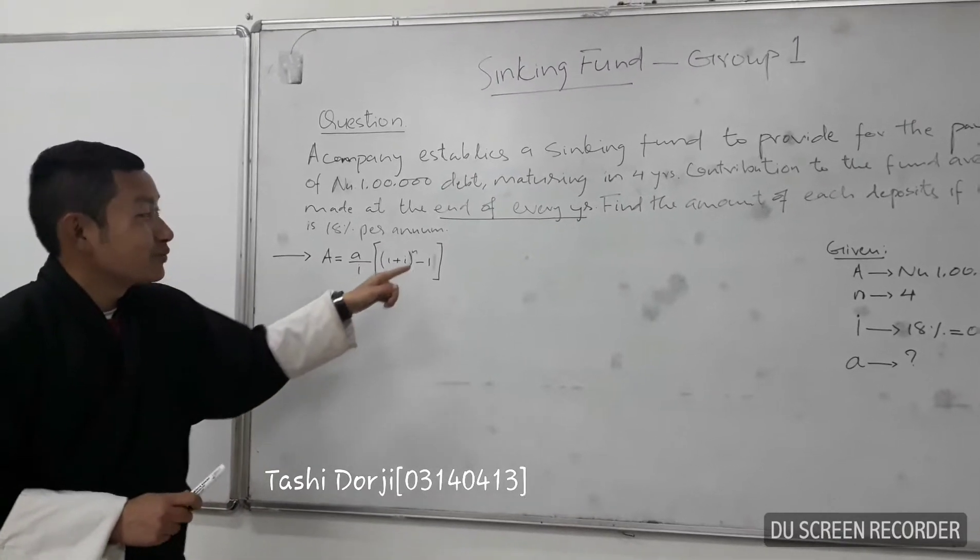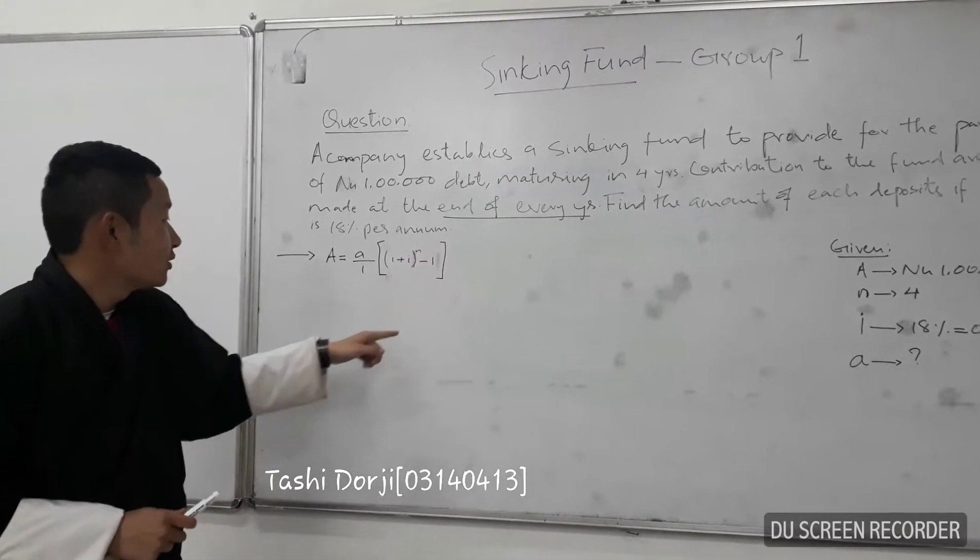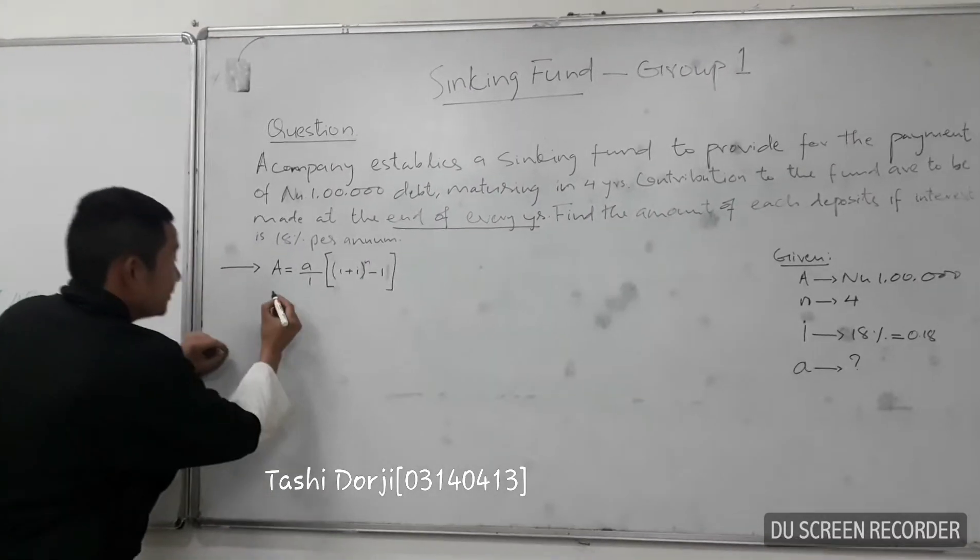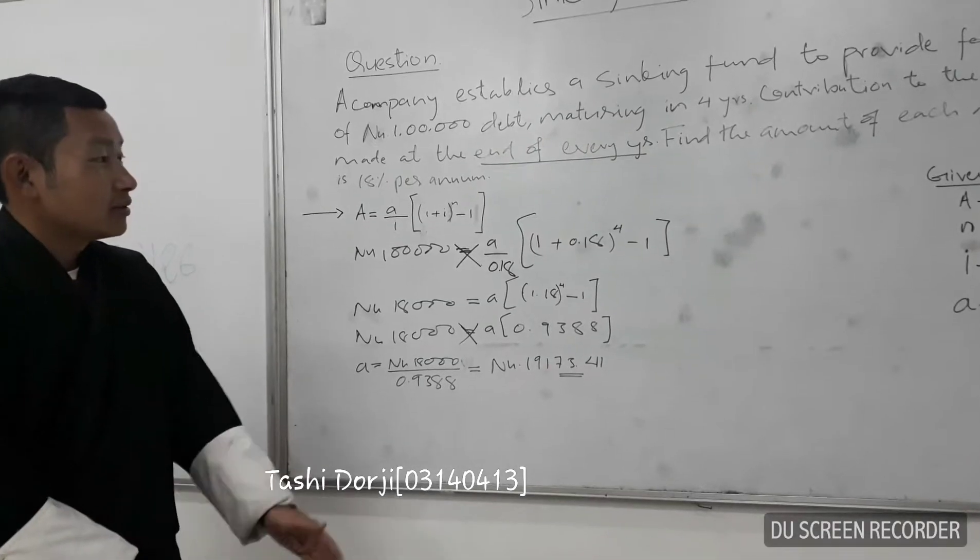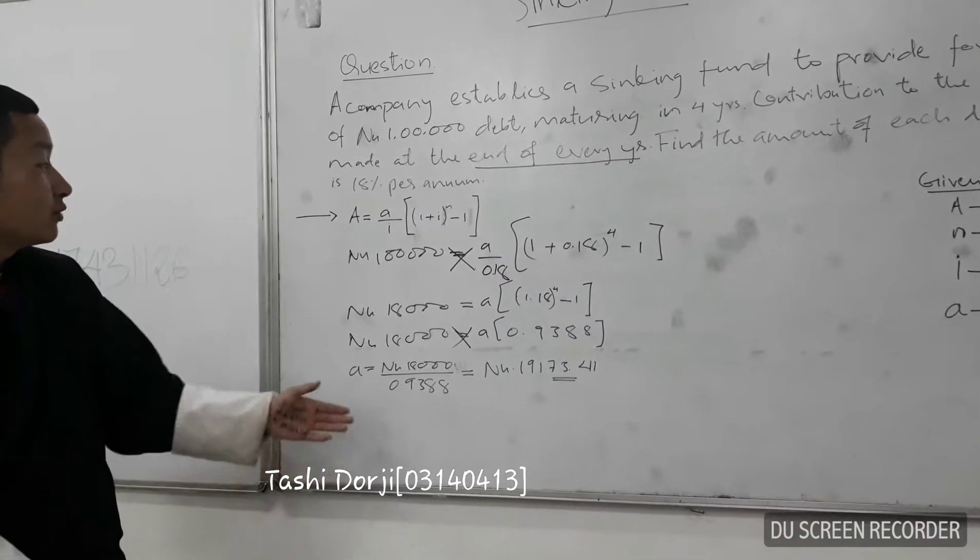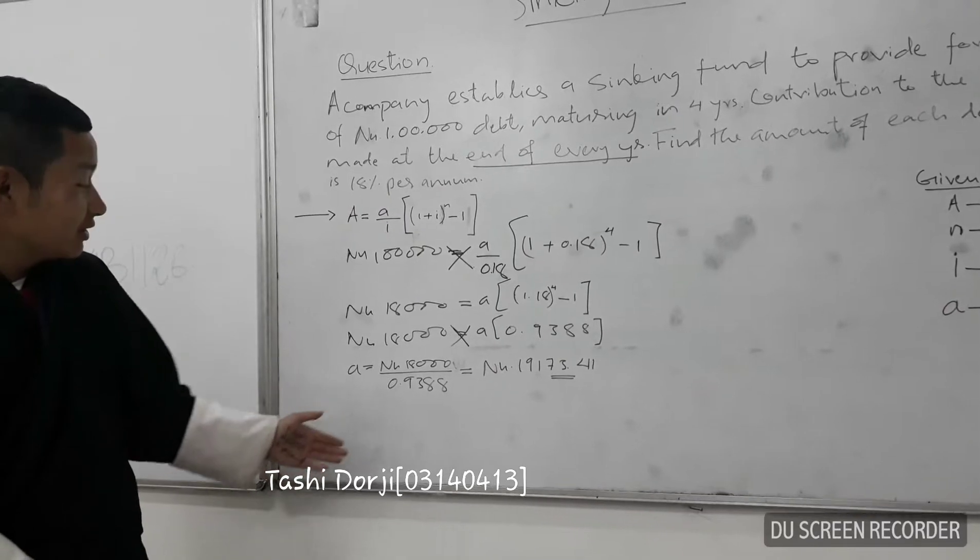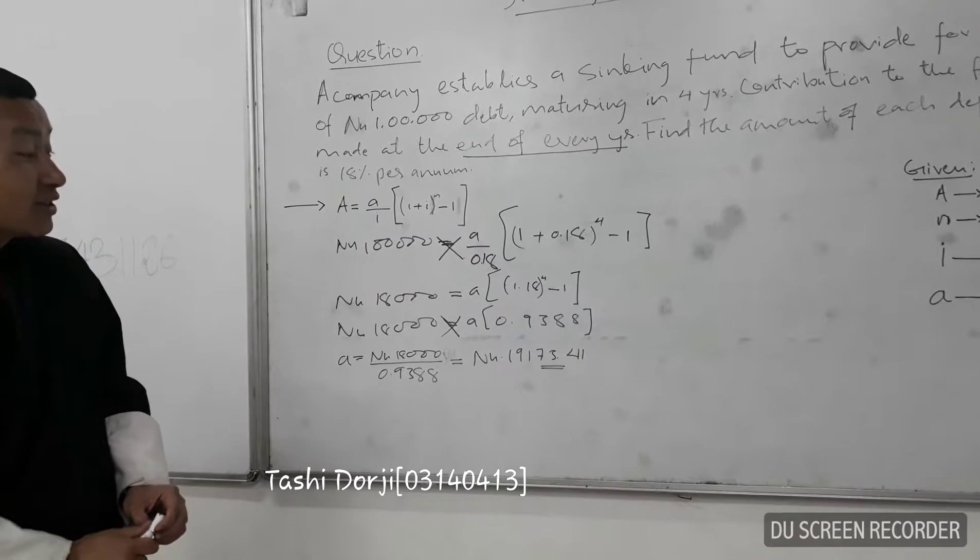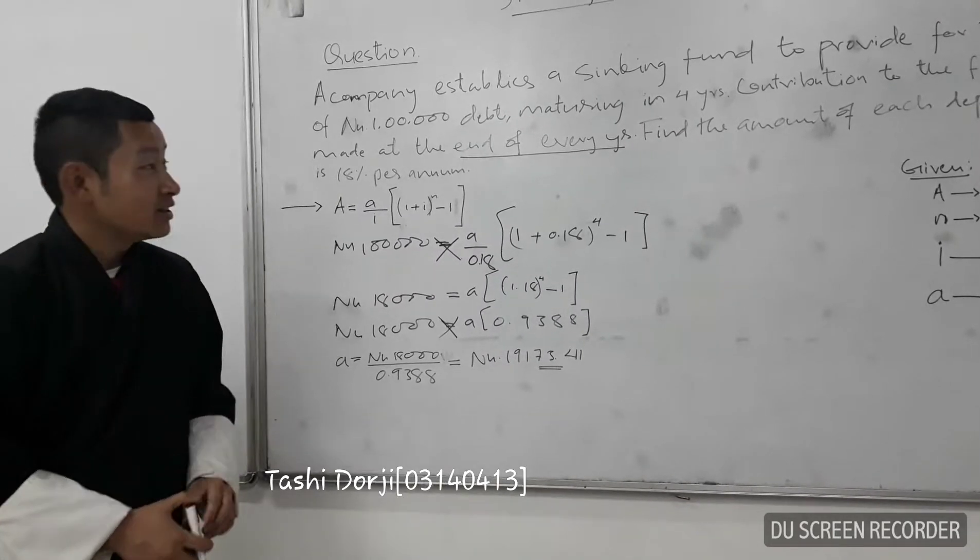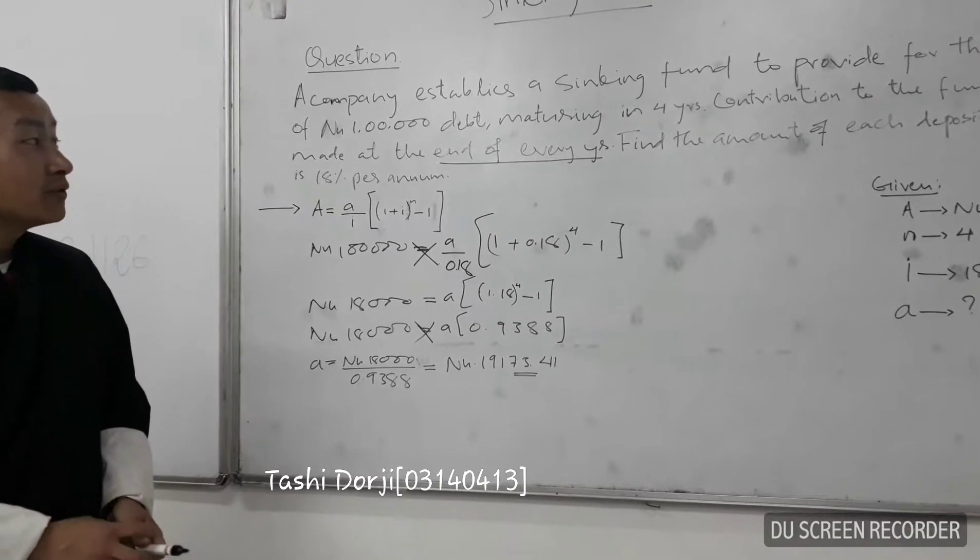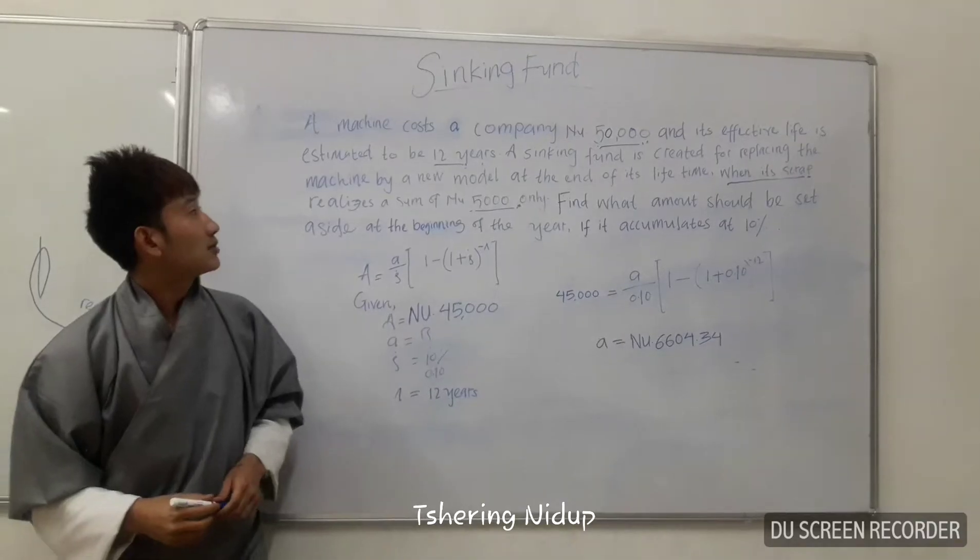To solve this, by replacing these given numbers, we get the answer of 19,173.41 rupees, and that is the amount we have to deposit at the end of every year. So I have a second question.